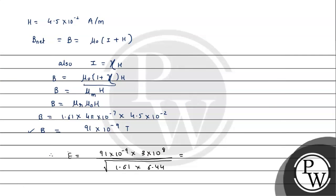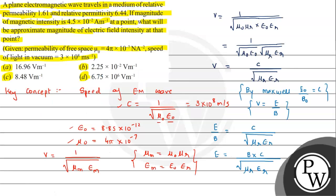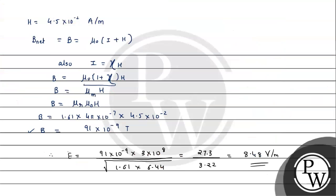We have 273 × 10⁻¹, that's 27.3 volts, divided by 3.22. Finally, we get the value 8.48 volt per meter. This is the answer to the question. If we look at the options, option C is the correct answer. I hope you understood the solution, all the best.